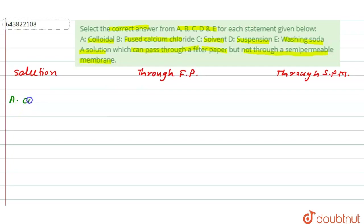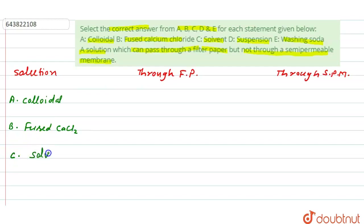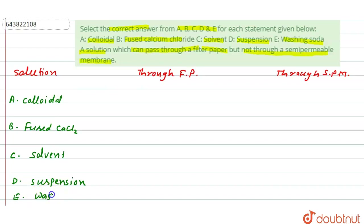The substances are: A is colloidal solution, B is fused calcium chloride (CaCl₂), C is solvent (pure solvent), D is suspension, and E is washing soda (Na₂CO₃·10H₂O).